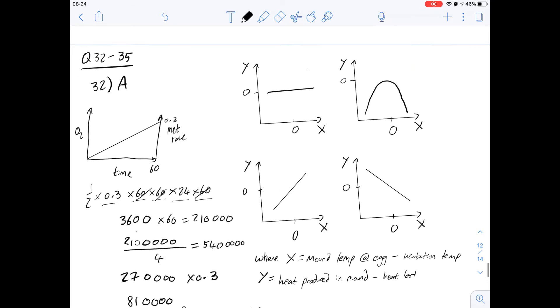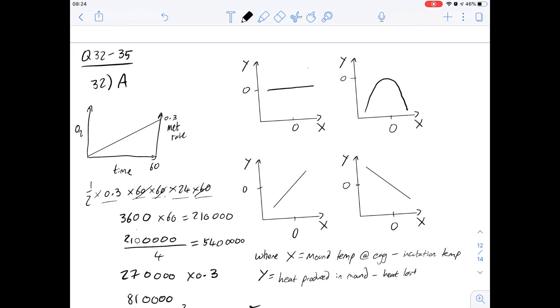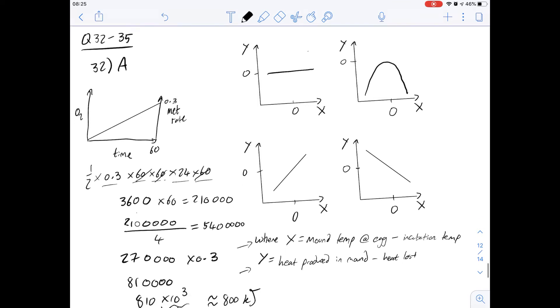And then 35 is a little bit of a tricky one. It gives us these four graphs here that I've copied out, and it says which one of them could be labelled as such here, where the x-axis is going to be the difference between the mound temperature and the incubation temperature, and where the y-axis is going to be the heat produced in the mound minus the heat lost. So this one I think seems a little more tricky than it is.